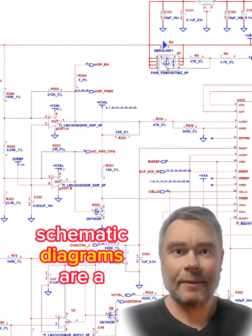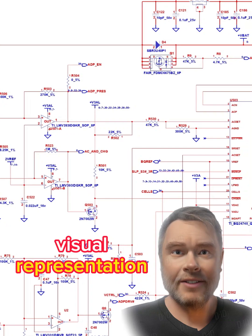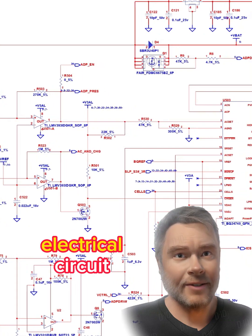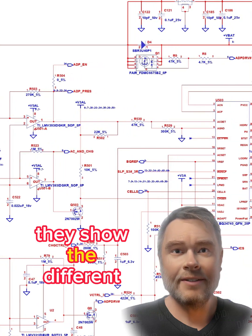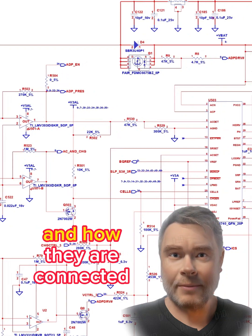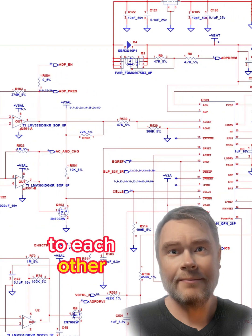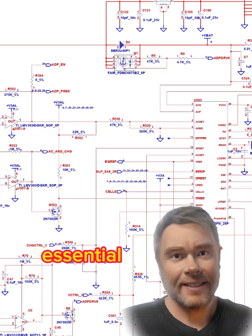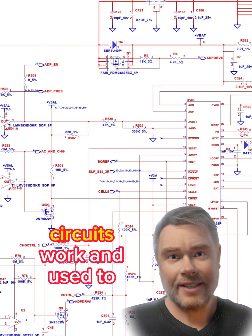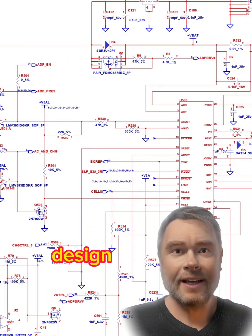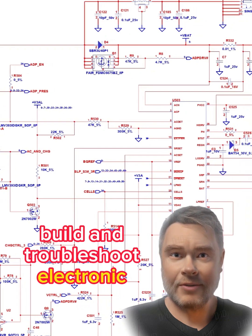Schematic diagrams are a visual representation or blueprint of an electrical circuit. They show the different components in the circuit and how they are connected to each other. Schematic diagrams are essential for understanding how circuits work and are used to design, build, and troubleshoot electronic circuits.